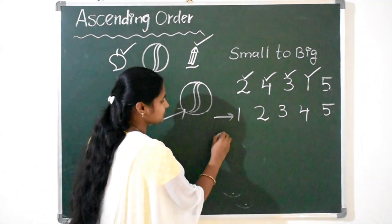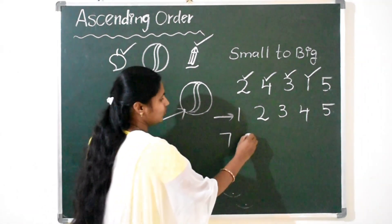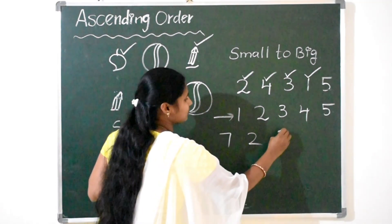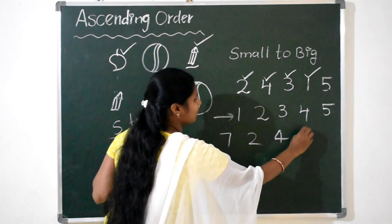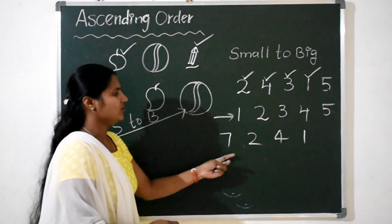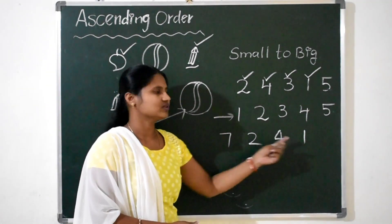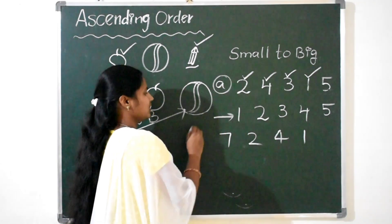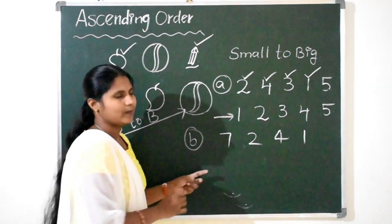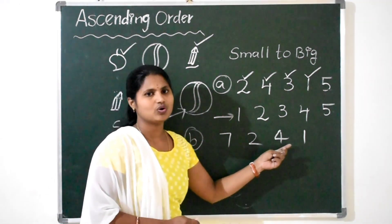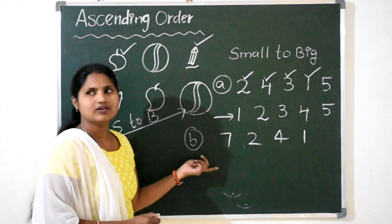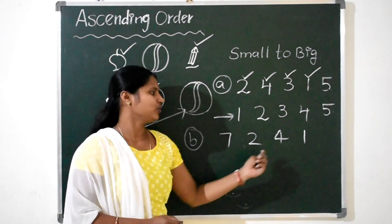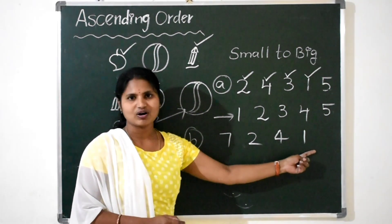We will take one more example: 7, 2, 4, 1. This is question A and this is question B: 7, 2, 4, 1. Now tell me, children, which number comes first here? Compared to all numbers, 1 is the smallest number, so 1 comes first.